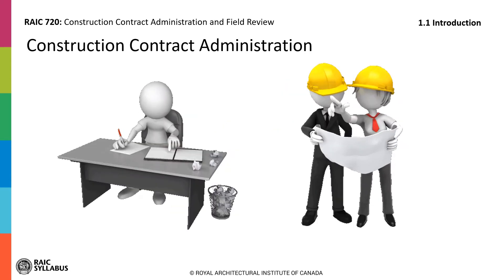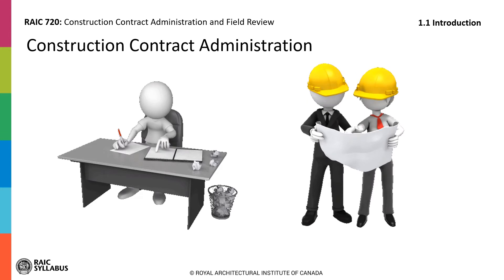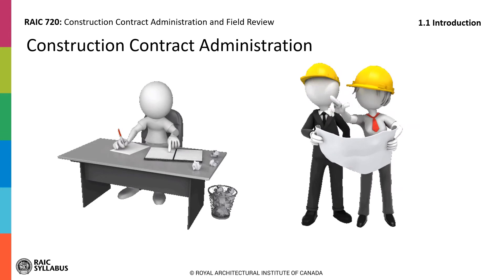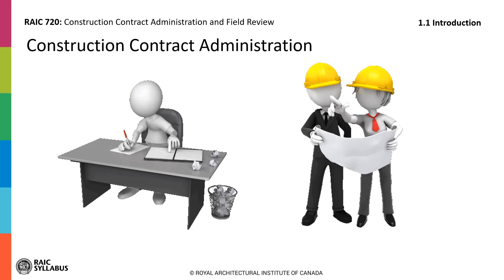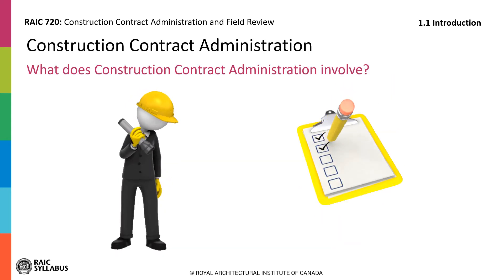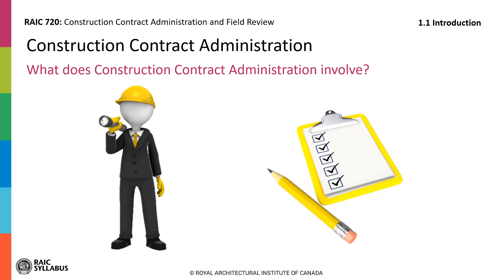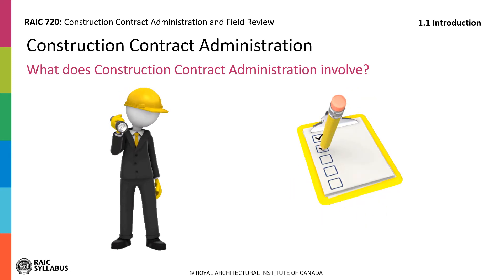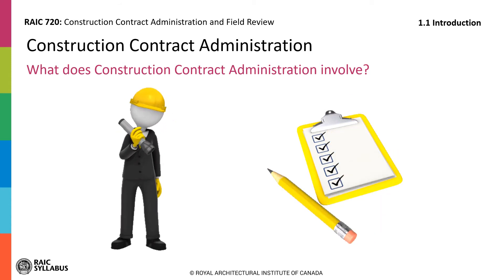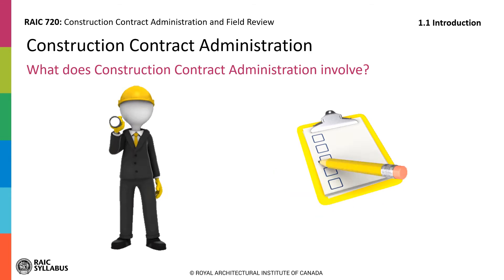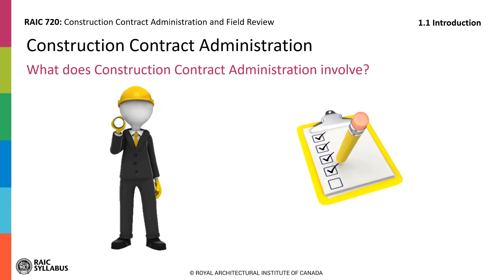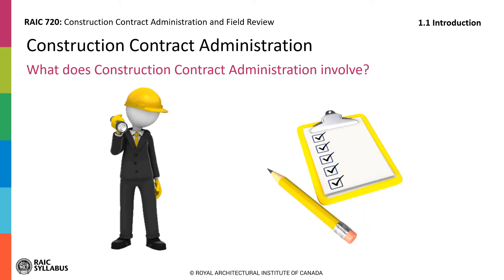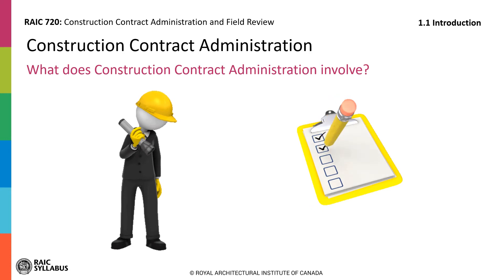Construction contract administration includes both office functions and field functions. These are not two different roles, but reflect different activities and responsibilities of the same role. The purpose of construction contract administration is to provide expert review of the work of the constructor, manage quality and validate scope through identifying non-conformance of the construction work when compared to the construction documents. It involves analysis of data gathered from construction site observations and documents review, and making decisions about whether interventions are needed to either insist that non-conforming work be rectified or change the design through the change process.